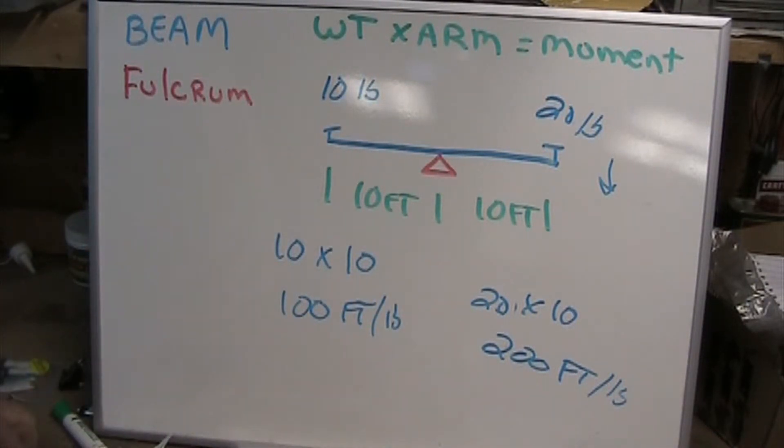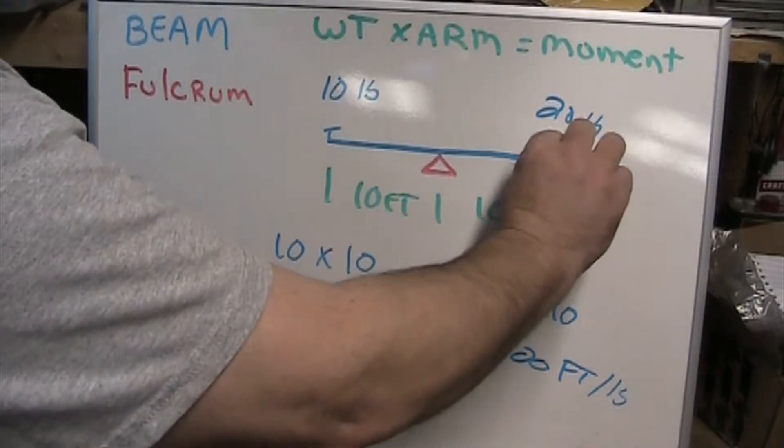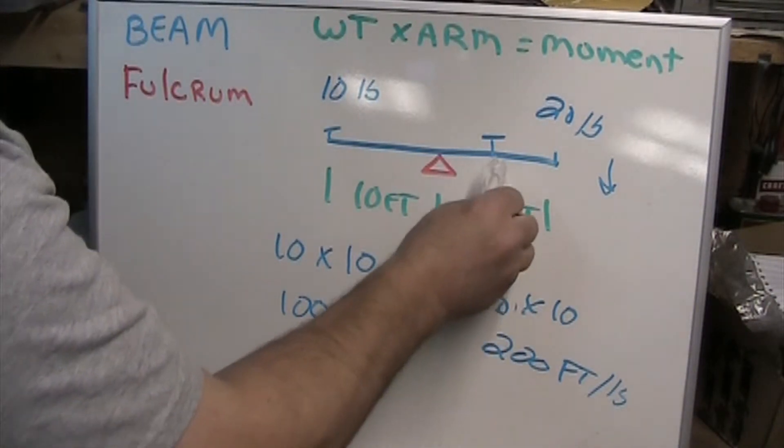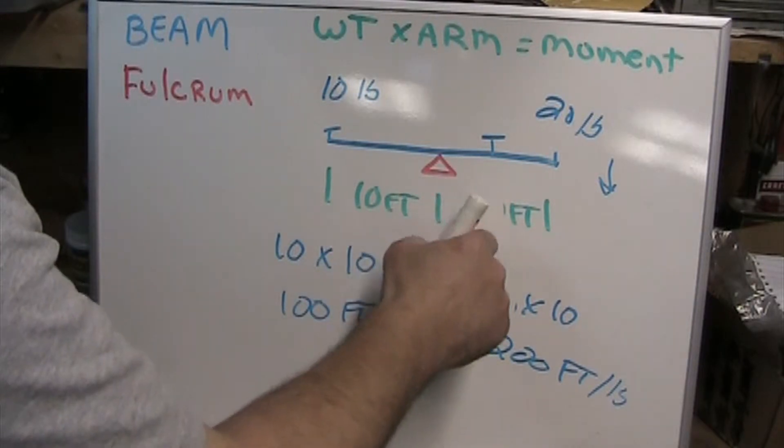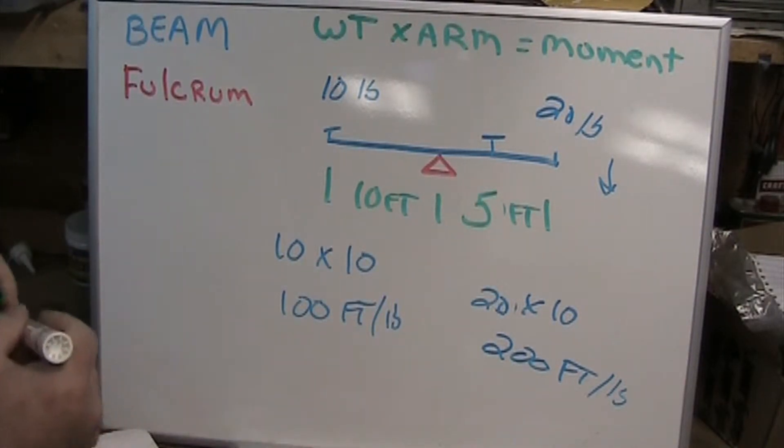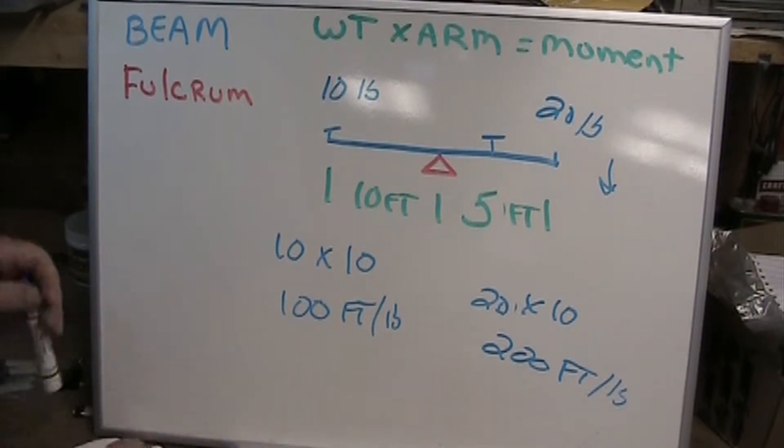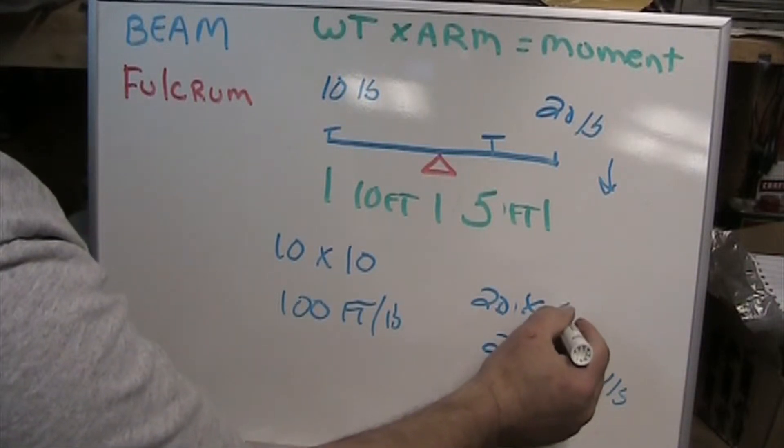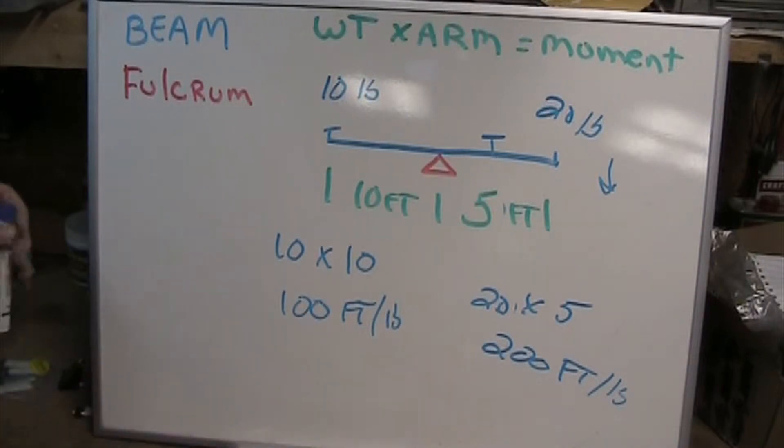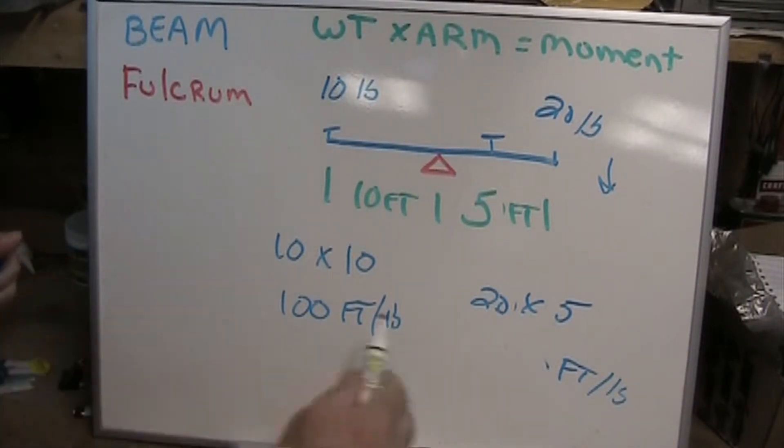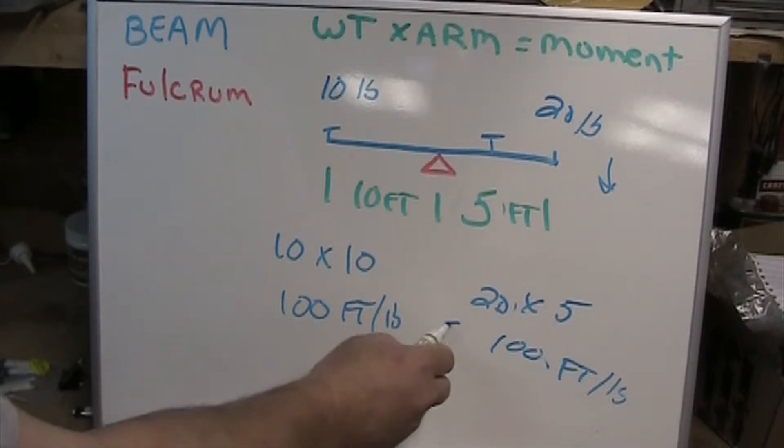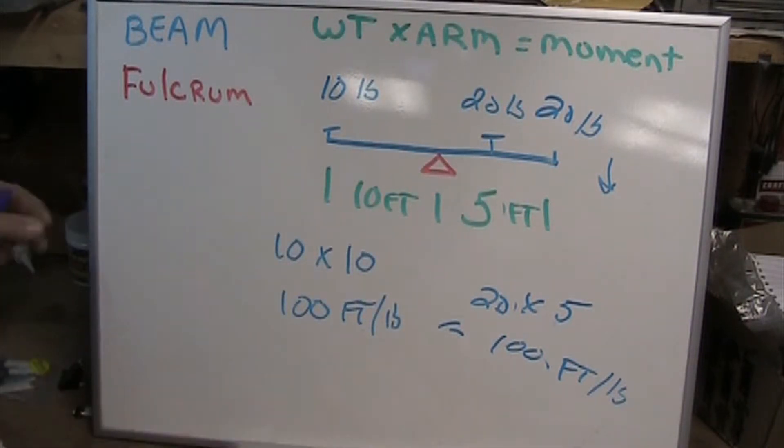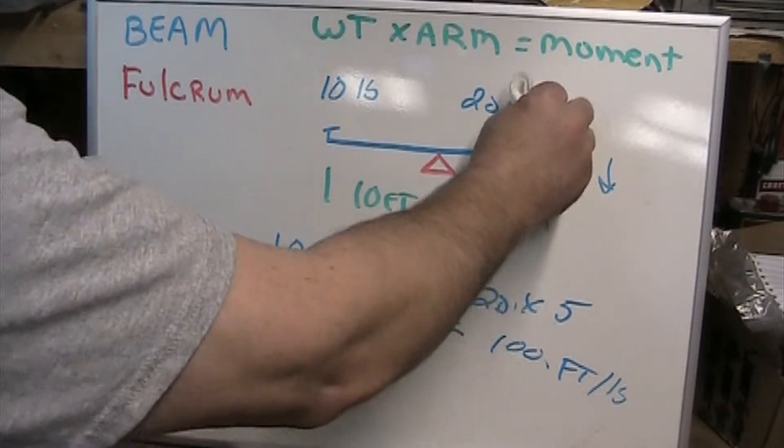How do we make that equal if I got 20 pounds on one side and 10 pounds on the other? We can change the seat position to 5 feet. So now 20 times 5 feet gives us 100 foot-pounds again, making it equal and the seesaw balances out.